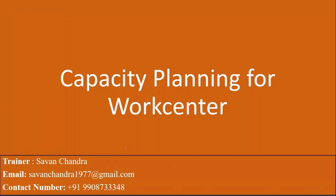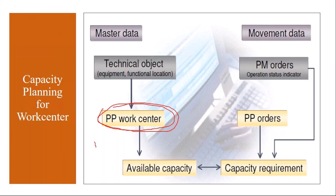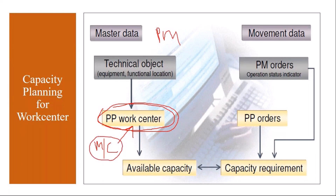The first topic is capacity planning for work centers. In PP-PM, the machine is nothing but a work center. If you recollect our master data sessions, in the PP module, normally the production machine is called a work center. Whereas in the PM module — the plant maintenance or engineering module — these machines are called equipment. So we need to link our PP work center with PM equipment.